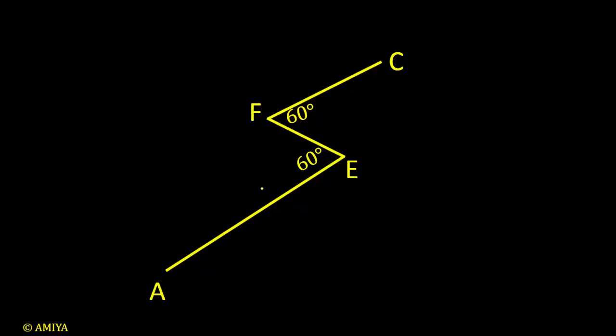Then I remove the data because first of all, we need to understand the question. Then I joined A and C and see G is the point of intersection of FC and AC.